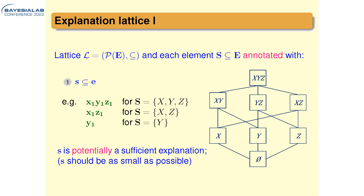At the next step in the lattice, one observed variable is missing. For example, for the lattice element {X, Z}, we check if X1, Z1 is sufficient to conclude T, and so on all the way down to the empty set. The further down we go, the smaller the sufficient sets get — and finding the smallest one is what we want to achieve.